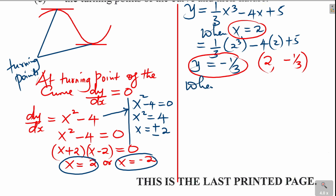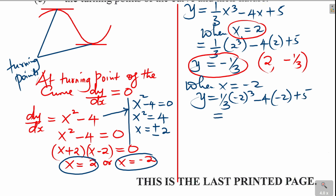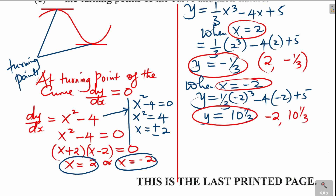For the second turning point, substitute x equals negative 2: y equals one-third times (negative 2) cubed minus 4 times (negative 2) plus 5. Using a calculator, this gives y equals 10 and one-third. So the second turning point is (negative 2, 10 and one-third). We now have both turning points: (2, negative one-third) and (negative 2, 10 and one-third).